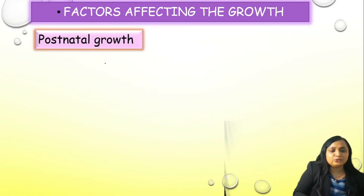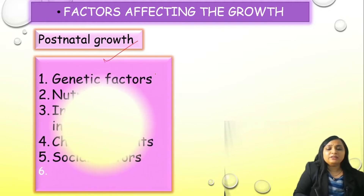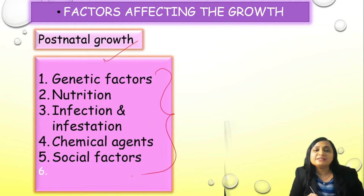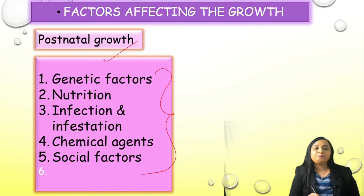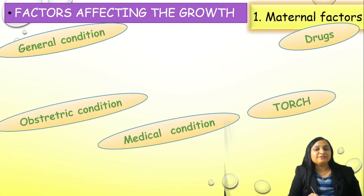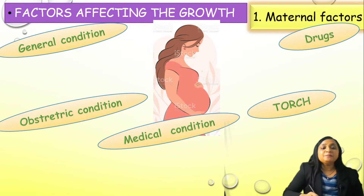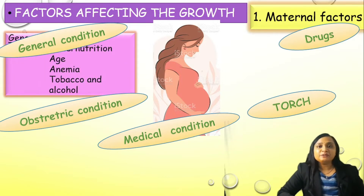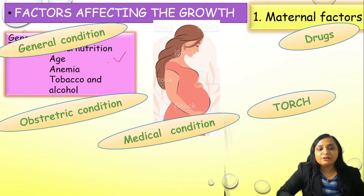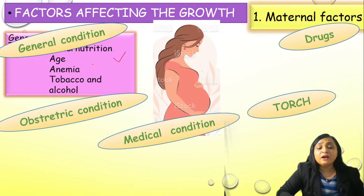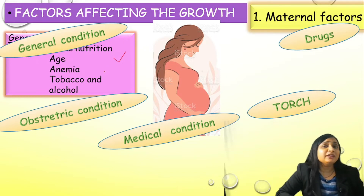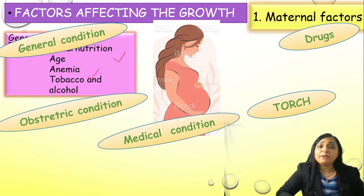Let us discuss first the antenatal maternal factor. The general condition of the mother is very important. General nutritional condition plays an important role because if she is well nourished and well built, she is going to give good nutrition to the fetus. Her age is also important — like teenage pregnancy or elderly primigravida may not give good nutrition to the baby. If she is suffering from anemia, she may hamper the growth. If she is having substance abuse in the form of tobacco chewing, smoking or alcohol, the blood supply to the fetus will not be good.